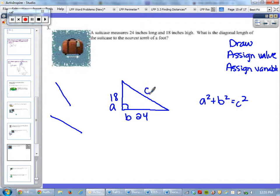Now I'm going to just plug them in. Solve using the Pythagorean theorem. I'm going to plug them in so I got 18 squared plus 24 squared equals c squared.